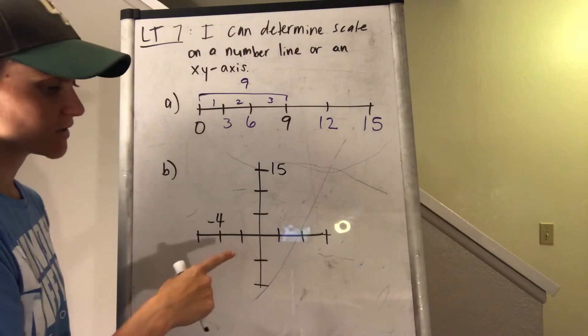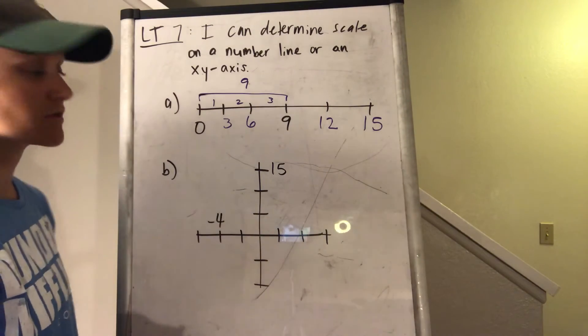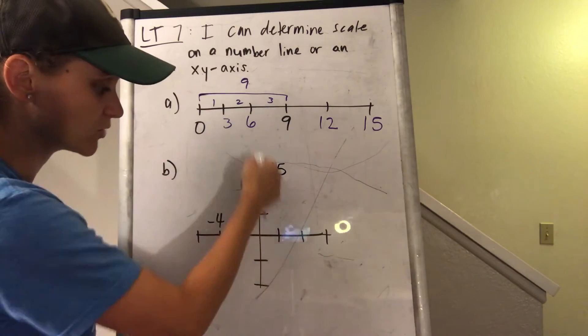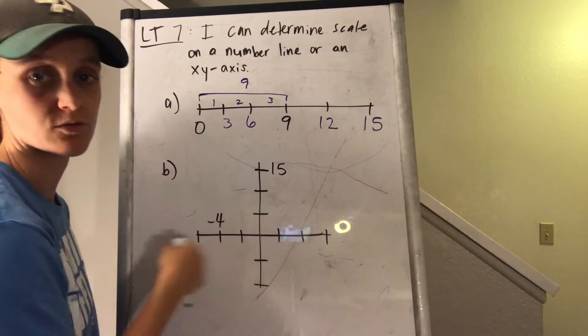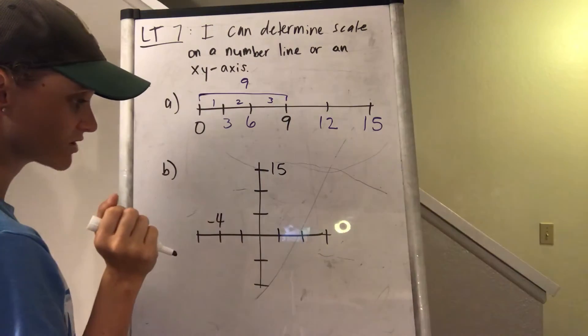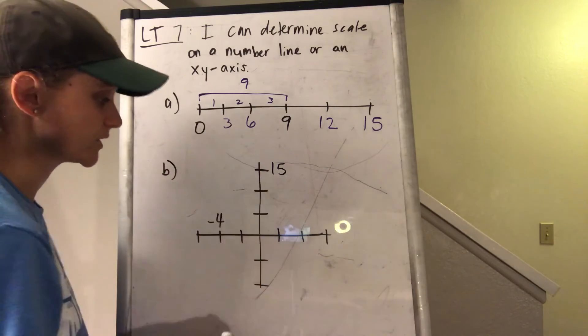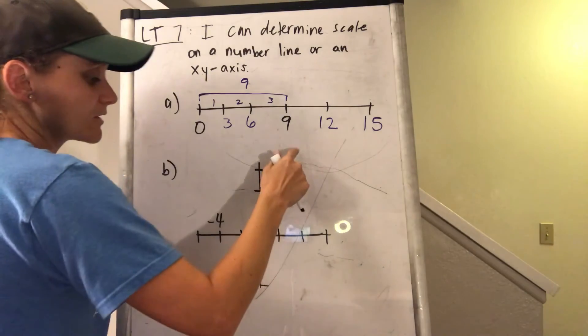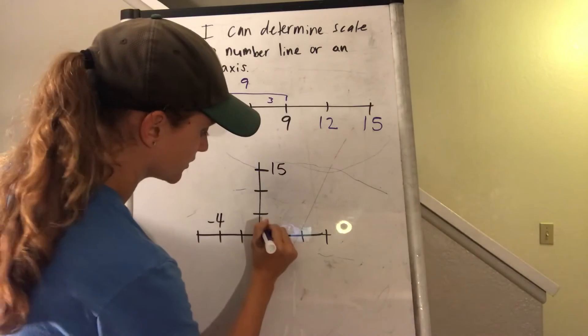Alright, down here, even though it's an xy-axis, it's pretty much the same thing. It's just 2 number lines. Here's 1 number line, and here's 1 that's horizontal. So why don't we start with the vertical one. So same idea as up here. So I start at 0. I know this is always 0.